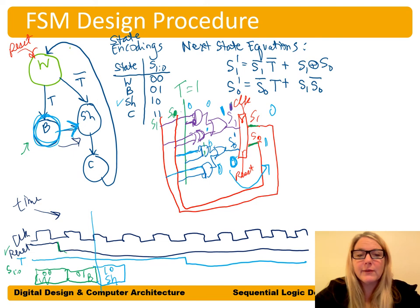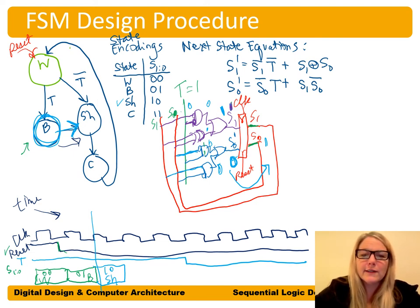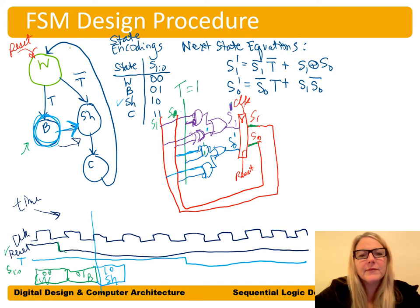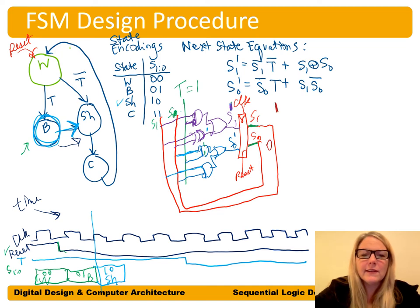Continuing the verification in the 10 (shower) state: for S0 prime, we get 0_bar = 1 and T=1, giving 1 AND 1 = 1 through the first gate, so S0 prime = 1. The next state on the left side of the register is 11. At the next clock edge, that becomes the current state: 11, which is the going-to-class state.